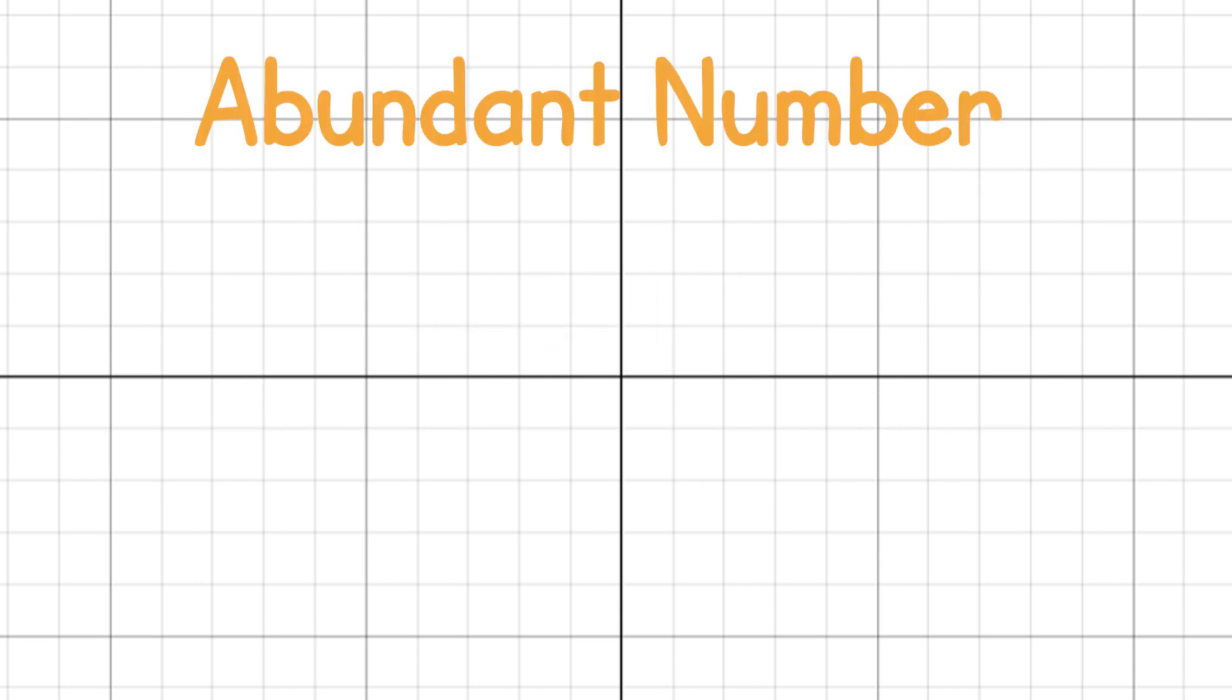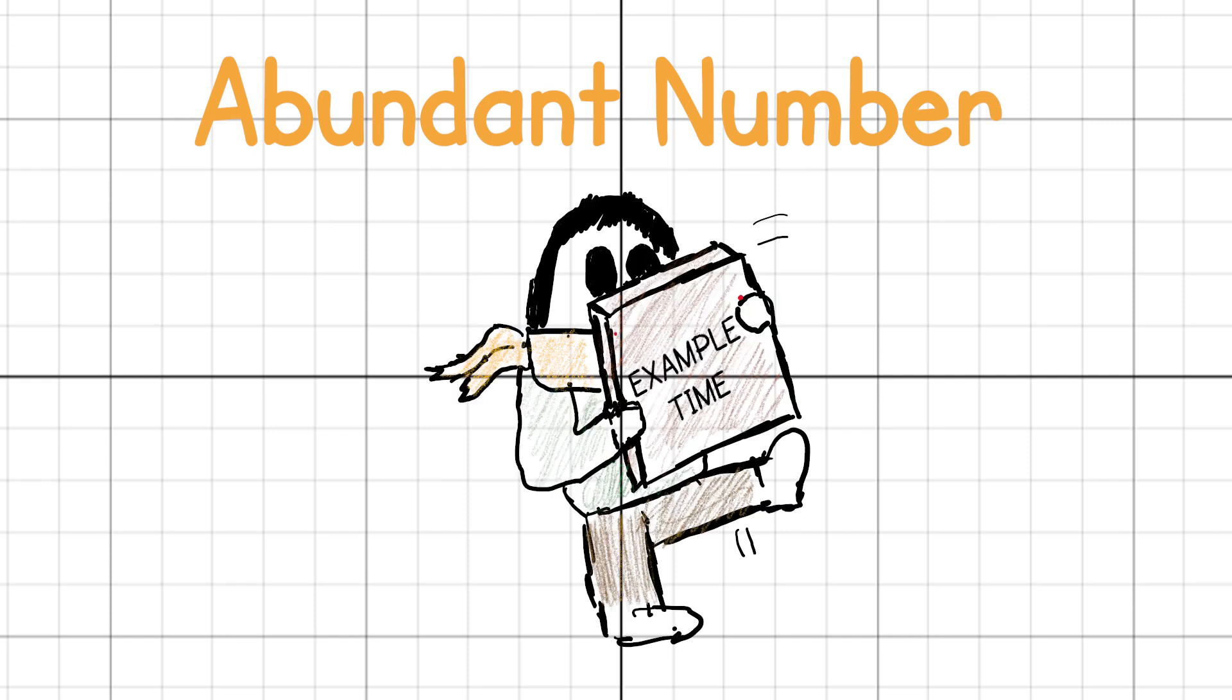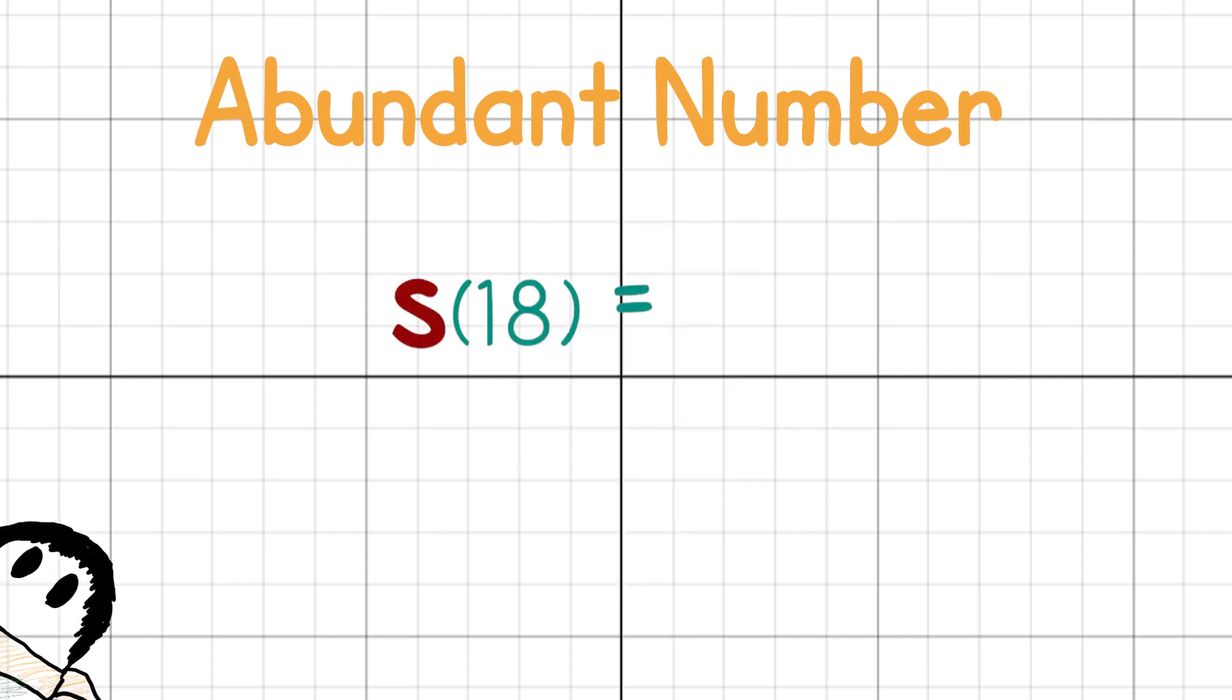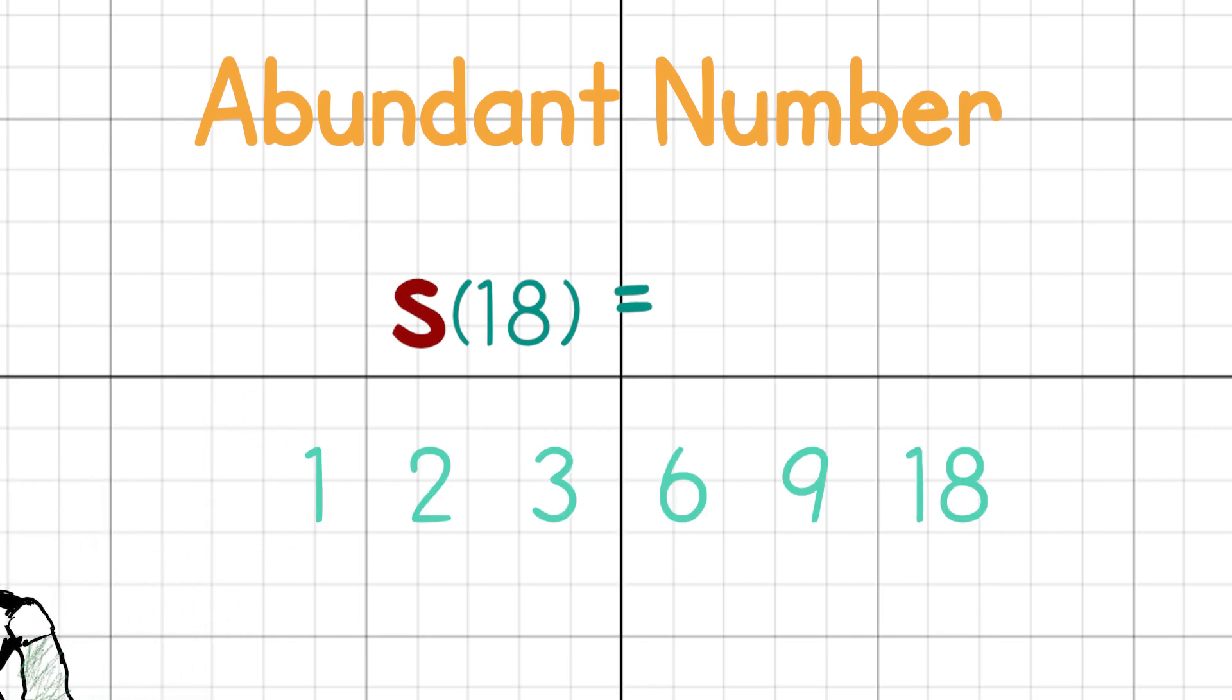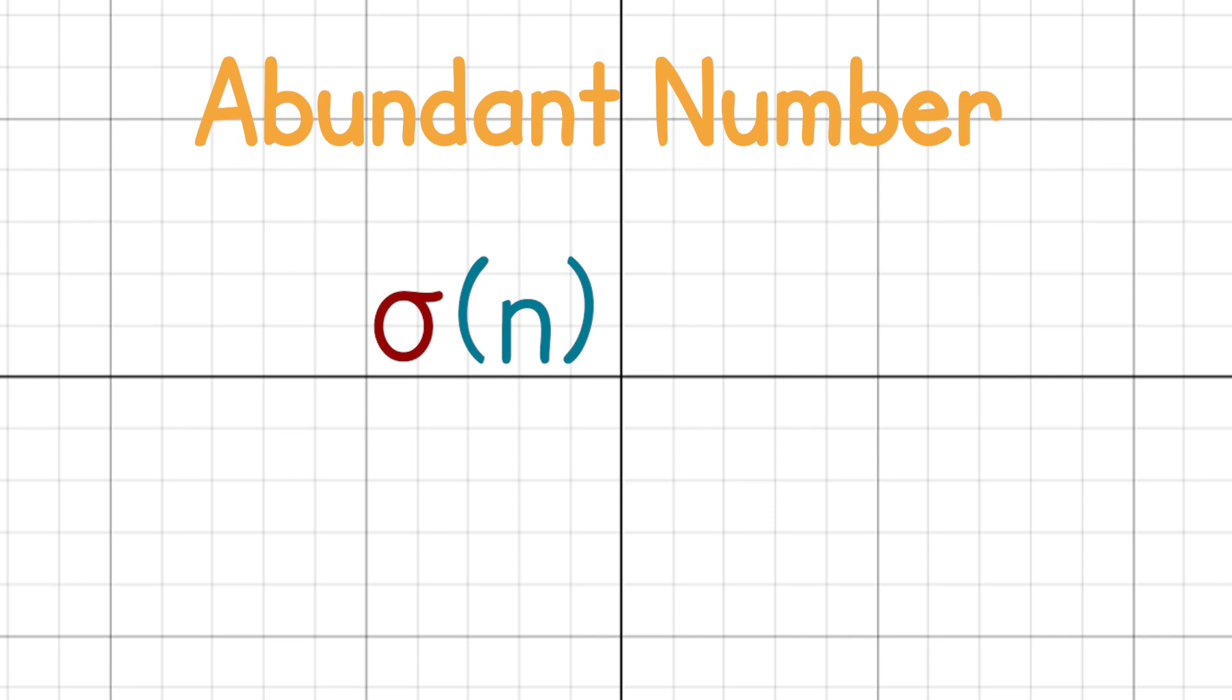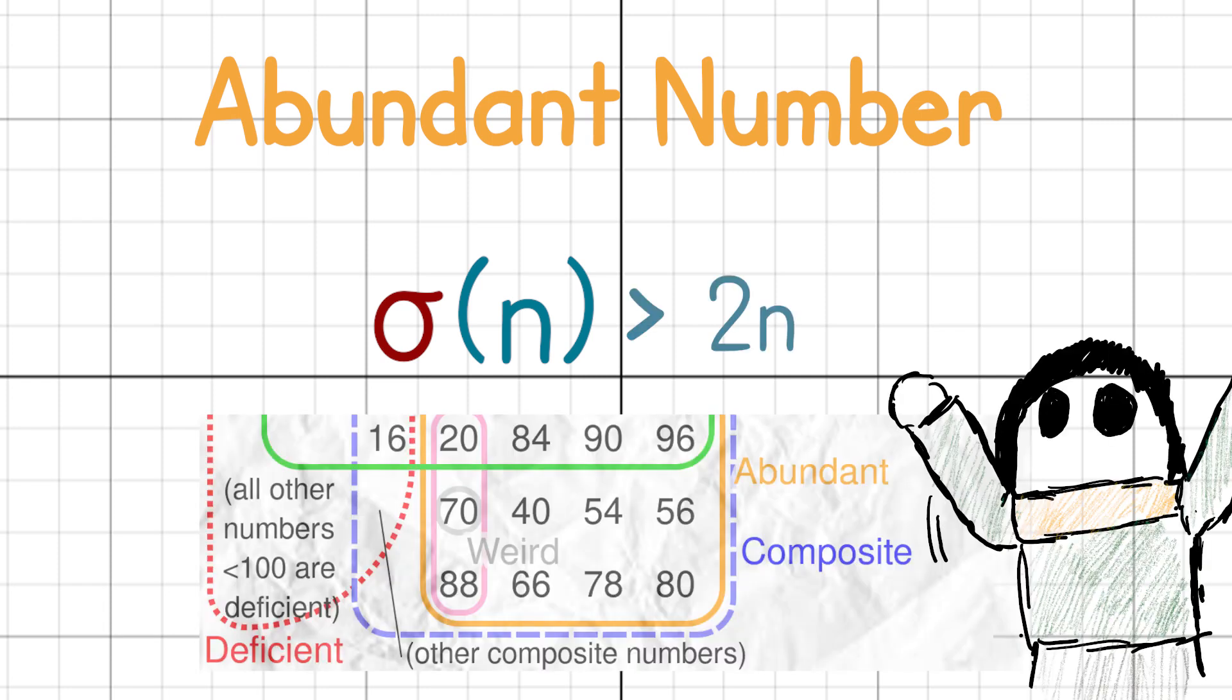An abundant number is one where the aliquot sum is strictly larger than the number itself. As my advisor would say, let's do an example. Let us compute the aliquot sum for 18. The divisors for 18 are 1, 2, 3, 6, 9, and 18. Remove the last one and add the rest to get the sum 21, which is larger than 18. So our boy 18 is abundant. We have the orange part now.